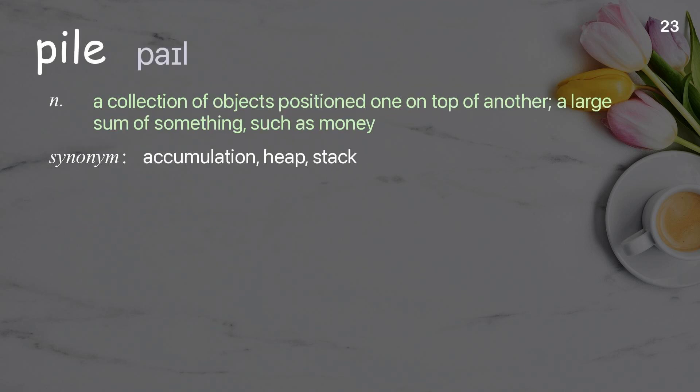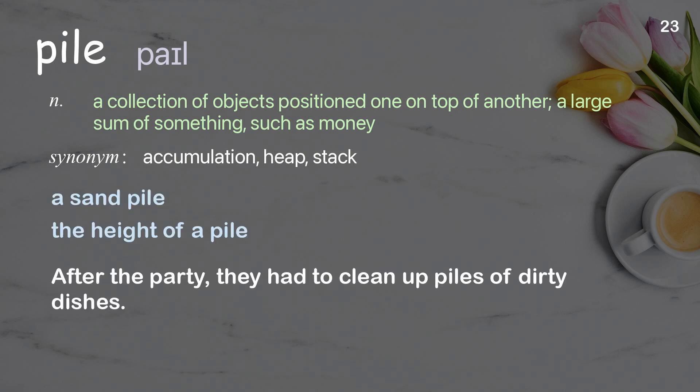Pile. A collection of objects positioned one on top of another; a large sum of something, such as money. Examples: A sand pile. The height of a pile. After the party, they had to clean up piles of dirty dishes.